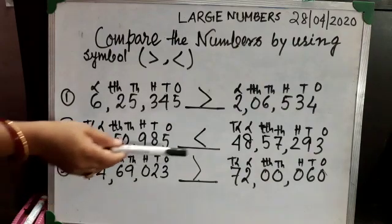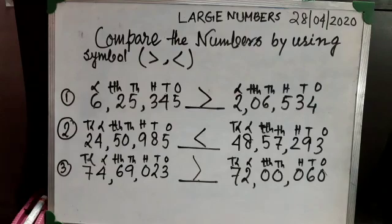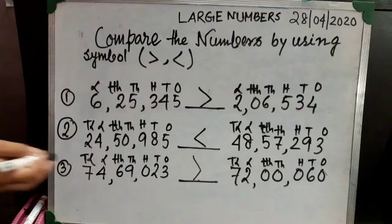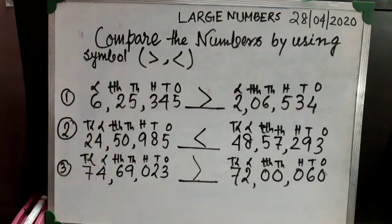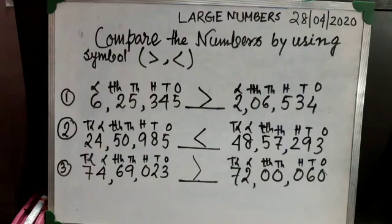One more example: seventy-four lakh sixty-nine thousand twenty-three, and the other number is seventy-two lakh sixty. We know that seventy-two is smaller, so seventy-two lakh is the smaller number, and I have given the sign accordingly. In this way you can compare large numbers. I end my class for today, but I have given you one worksheet that you have to complete. Thank you.